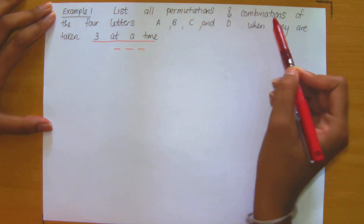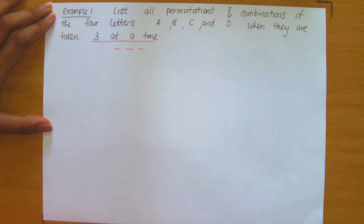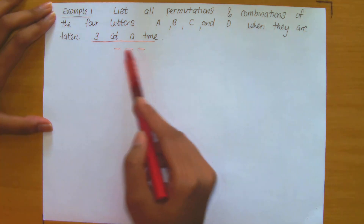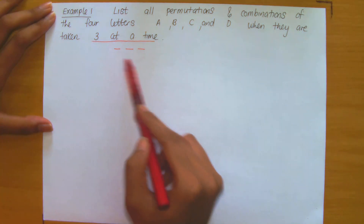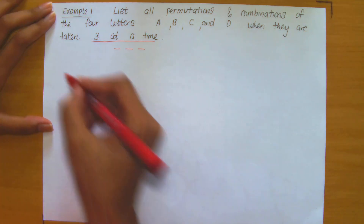Because we are working with permutations and combinations, no repeats are allowed — that is one of the conditions. For example, listing the letter A twice in a three-letter arrangement is not permitted, so we need to keep that in mind.